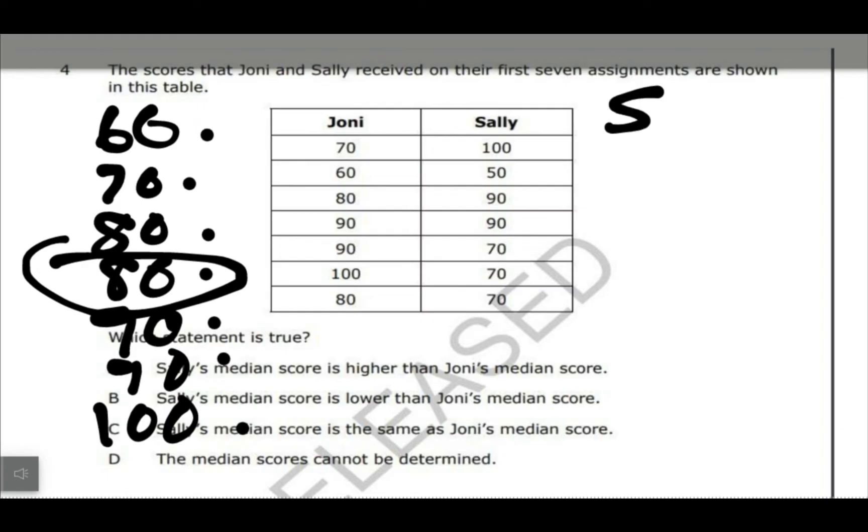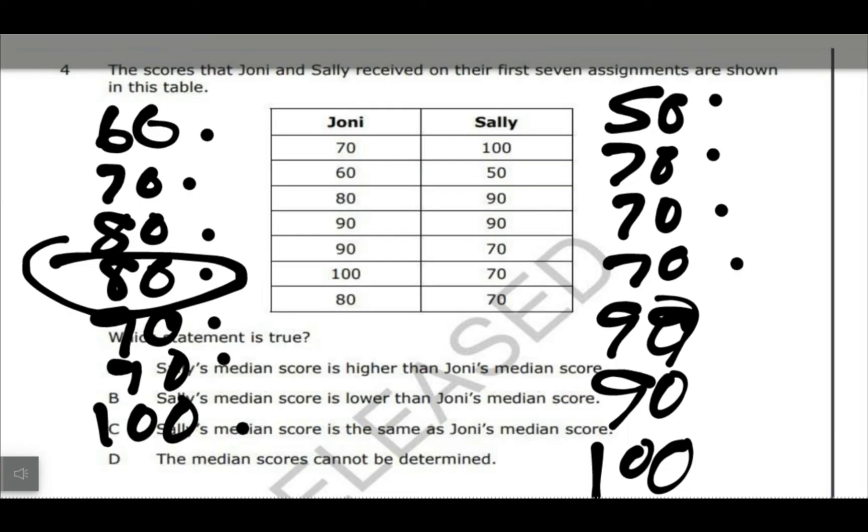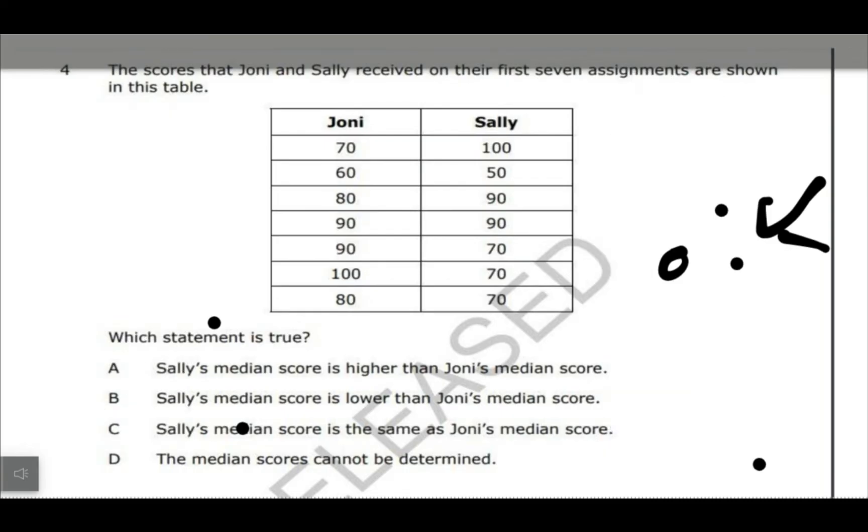Then I want to order Sally, so I got 50, you got three 70s, two 90s, and then 100. So again, this one also has seven, so the middle one would be this one right here. So Johnny's is 10 more than Sally's. So I'd go through, it says Sally's median is higher. That's not the case because hers is 70. Second one says Sally's median is lower, and that would be the case because 70 is lower than 80. So that would be B for that one. Just remember with median, you got to have them in order, and then the median is just the middle number.